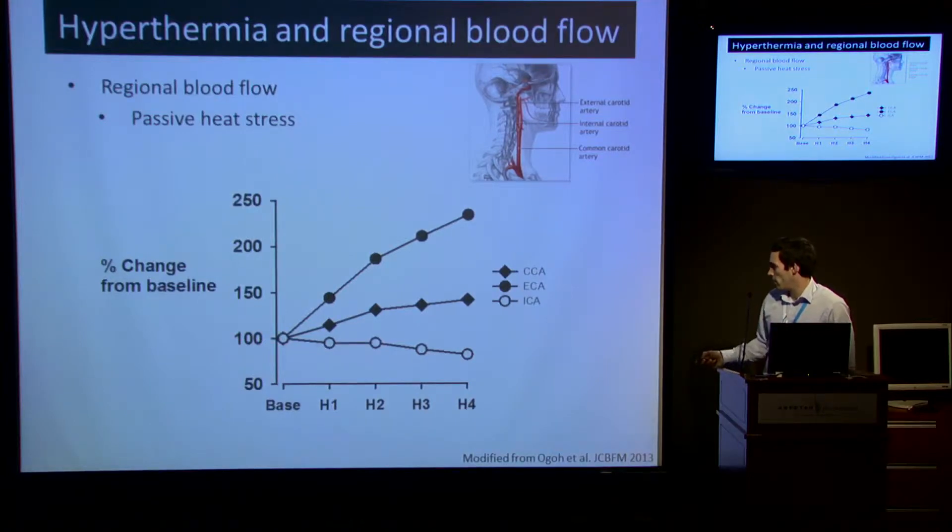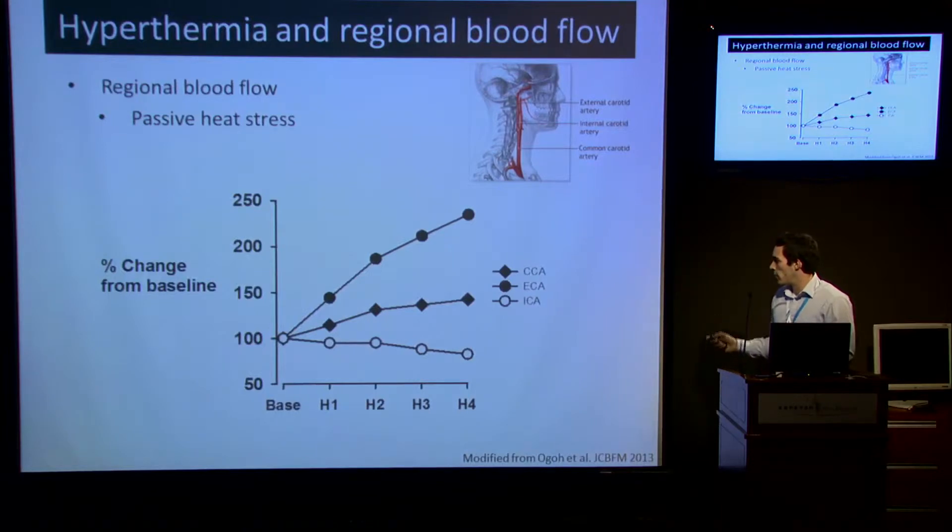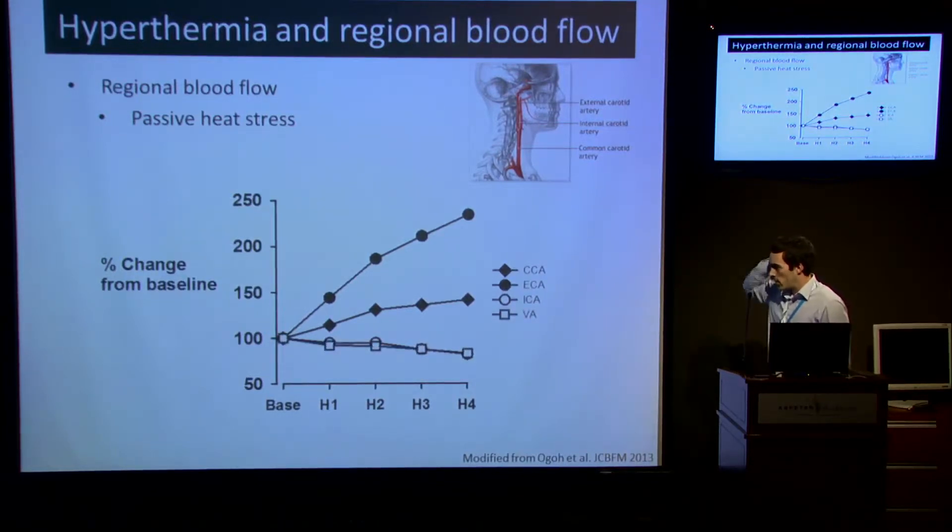It's important to mention that the ICA, there are two ICAs, so this arrangement of vessels is on the left-hand and right-hand side of the neck. And there are also posterior vessels, the vertebral artery that supplies the brain and spinal cord.